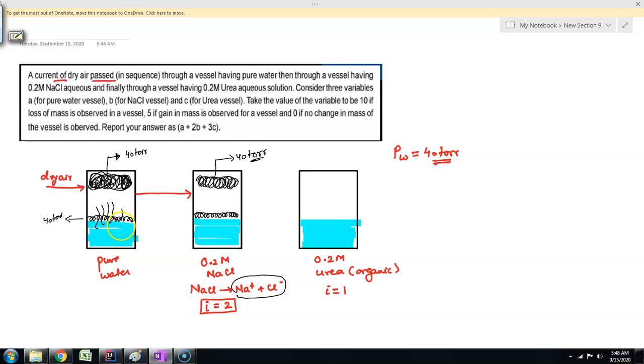Earlier there were no particles, so it was exactly getting to 40 torr. But now particles are there. It's a colligative property, so the vapor pressure has decreased. Let us say now it becomes 36 torr because of the presence of non-volatile solute which is also dissociating.